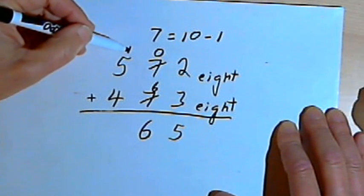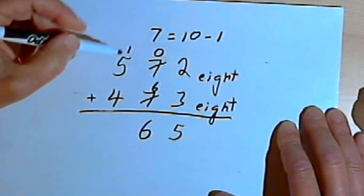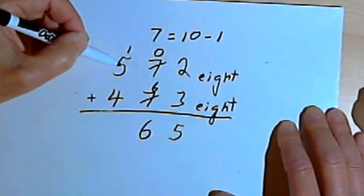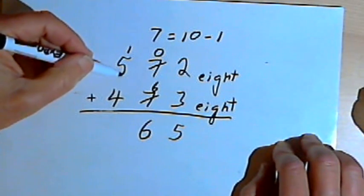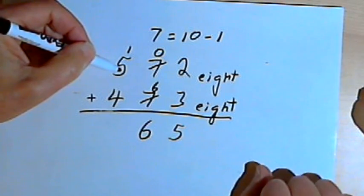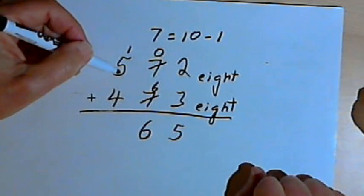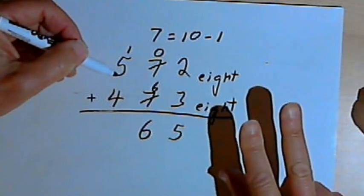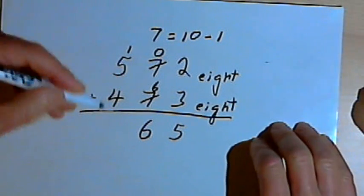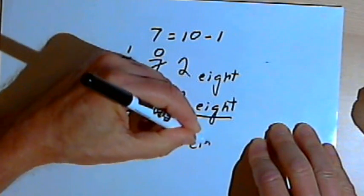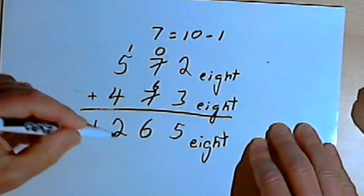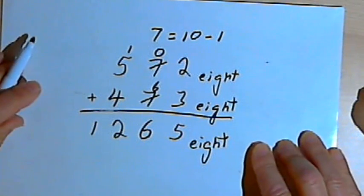And then I've got to add 1 plus 5 plus 4. Well, counting up from 5, counting up from 1 first, that's just 6. And then I have to add 6 and 4. So let's see, I've got 6, I'll use my fingers: 7, 10, 11, 12. So now I've got my answer: 1265 base 8.